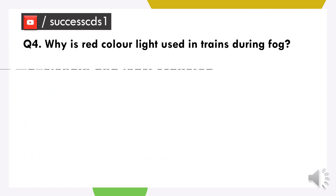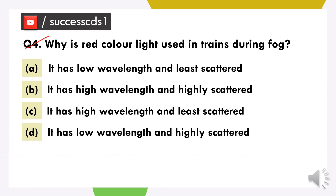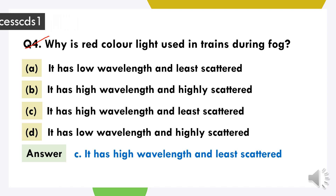The next question is: why is red colour light used in trains during fog? Red colour ki light high wavelength rakhti hai aur sab se least scattered hoti hai.